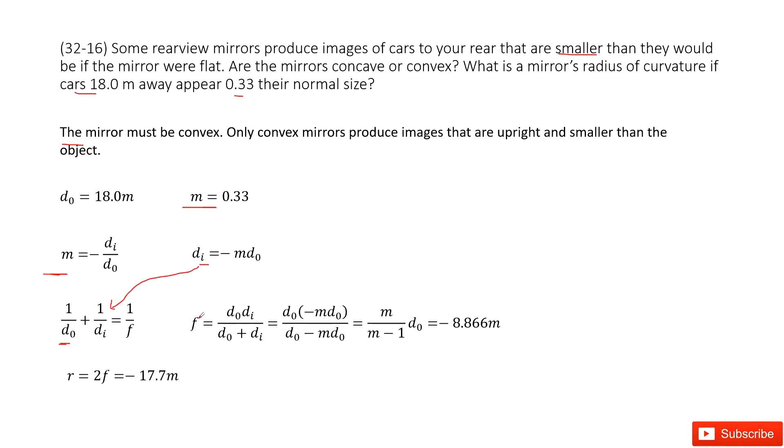We can get the function for f that looks like this one. And then input all the quantities. We get a value for f, the focal length, as negative 8.866 meters.